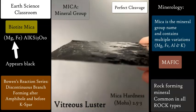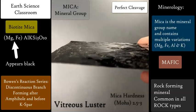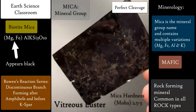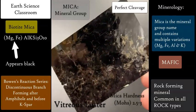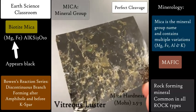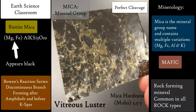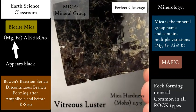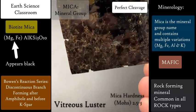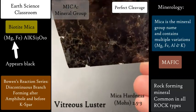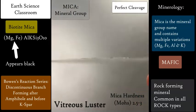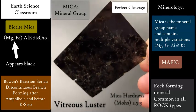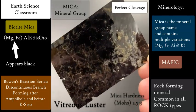It is mafic in characteristics, and it's also on the Bowen's reaction series, but it is on the discontinuous series after amphibole and before you get into the potassium feldspar. So mica is special through its phyllosilicate framework, creating this beautiful, thin, layered mineral.